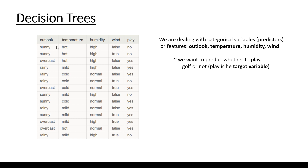First, let's talk about the dataset we have. We have four features: outlook, temperature, humidity, and wind, and a single target variable — whether we are going to play golf or not. This dataset doesn't contain any numerical values; it contains categorical variables. The outlook can be sunny, overcast, or rainy; temperature can be hot, mild, or cold; humidity can be high or normal. We like decision trees because they handle both categorical variables and numerical values.